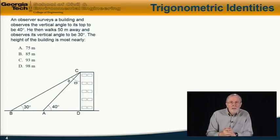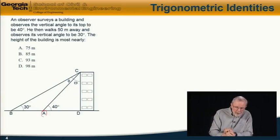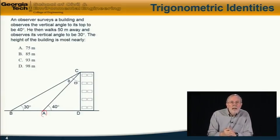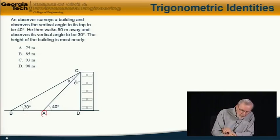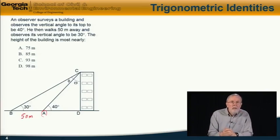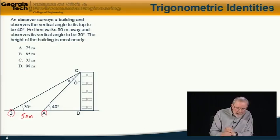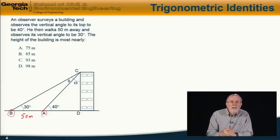Here's a sketch. We have the building, and here is the first observation point, which I'll label A, and he observes that the angle to the top is 40 degrees. Then he walks 50 meters away to point B, where he observes that the angle is 30 degrees. The question is, how high is the building? In other words, the height CD in those triangles.